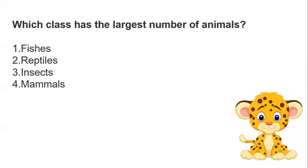The first question of the day: which class has the largest number of animals? Options are fishes, reptiles, insects, or mammals. The answer is option 3 — insects. Insects are the group which has the largest number of animals. Clear with that.